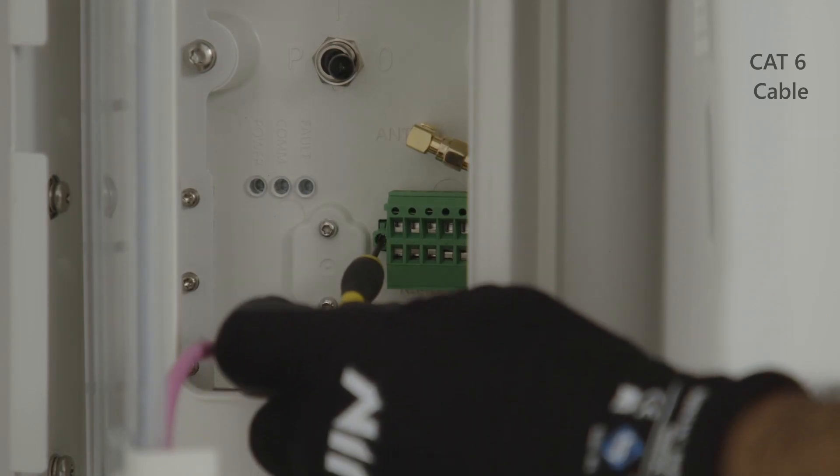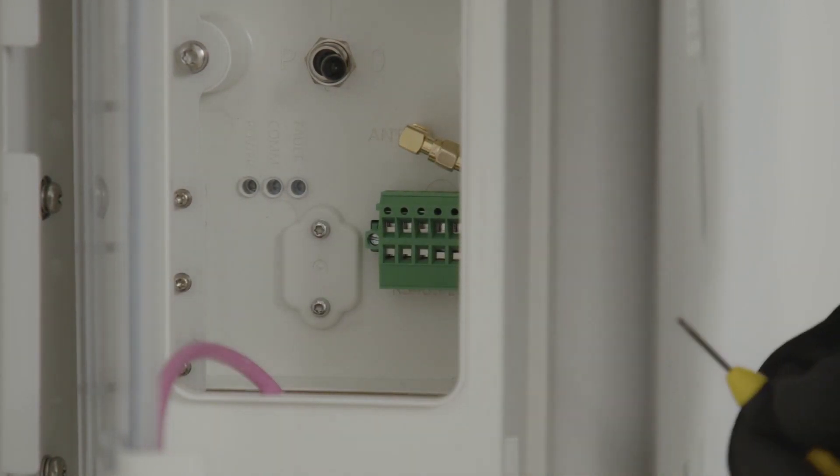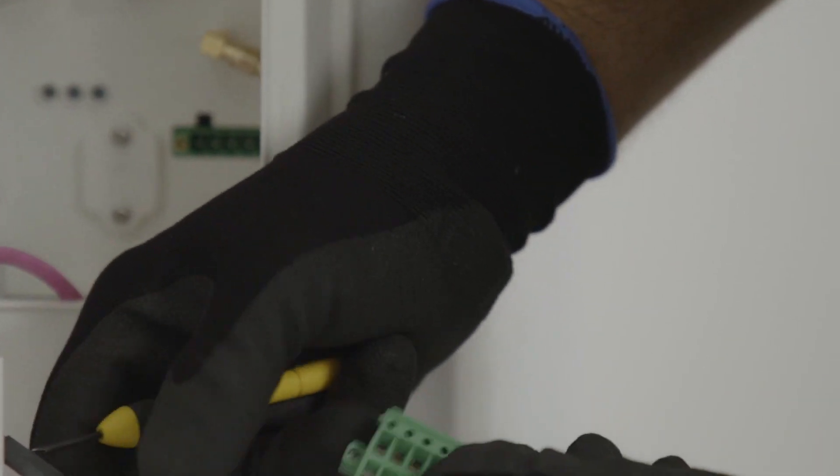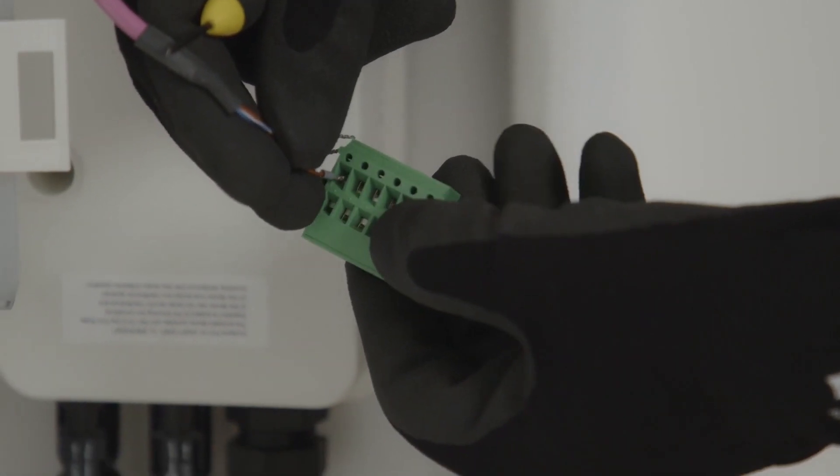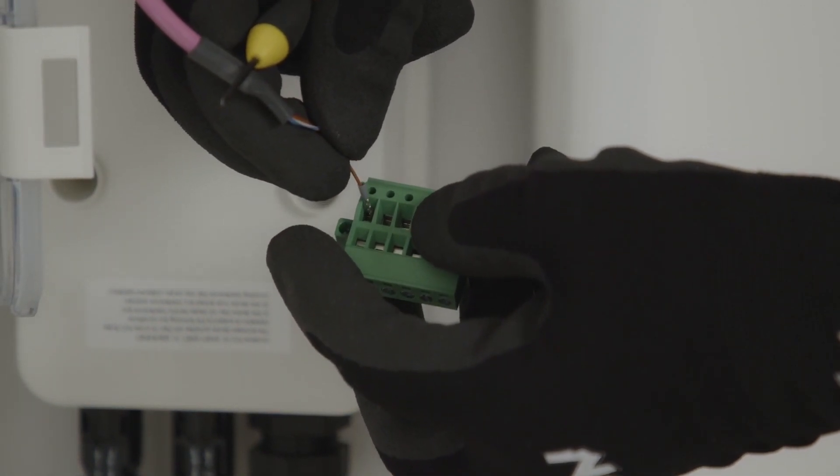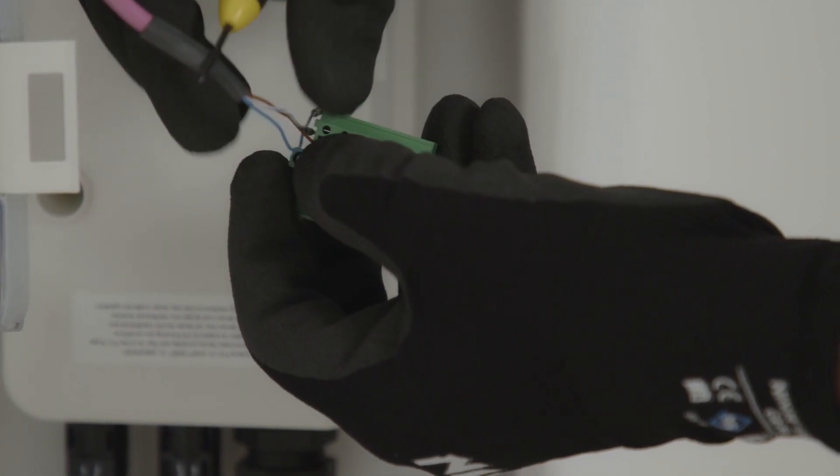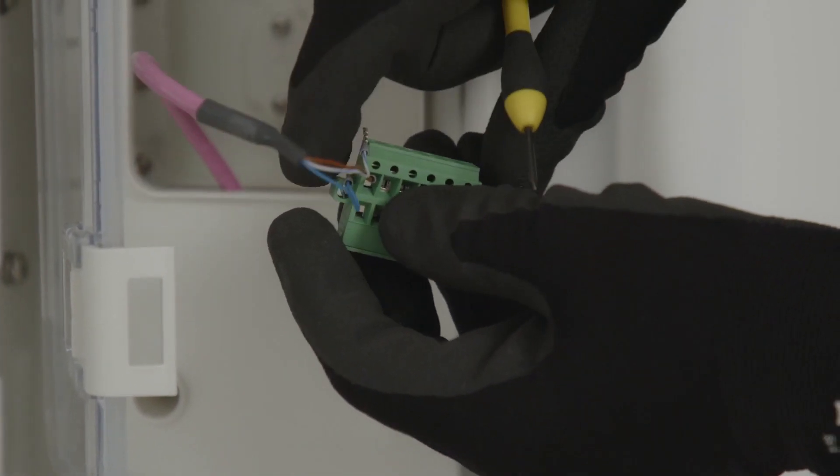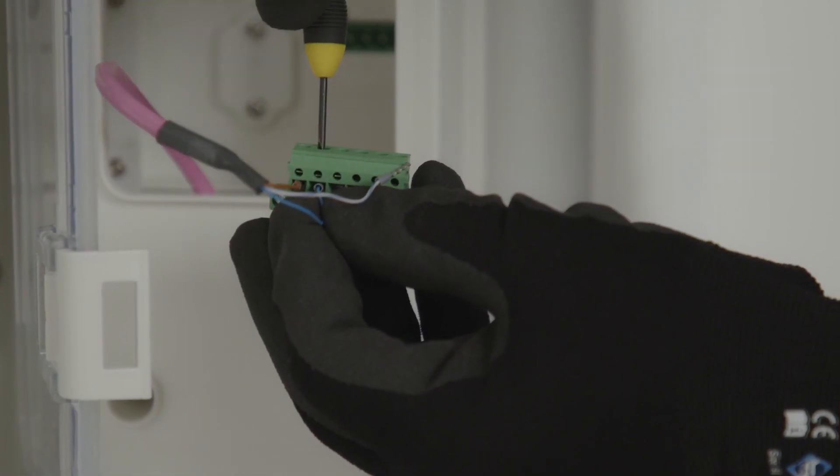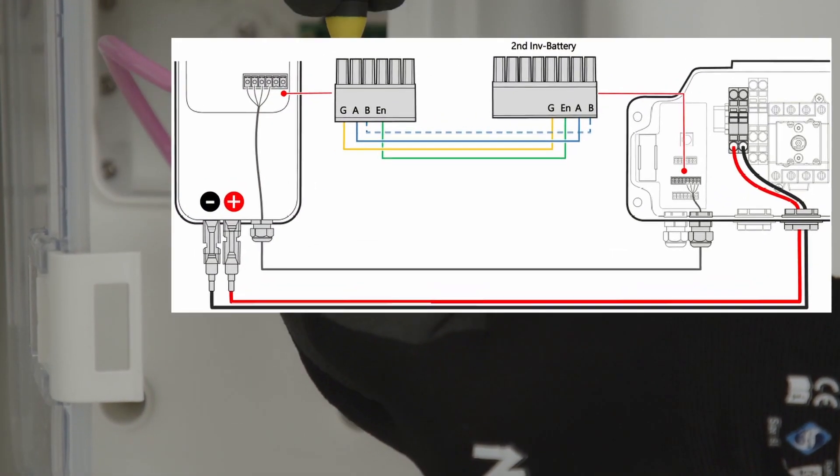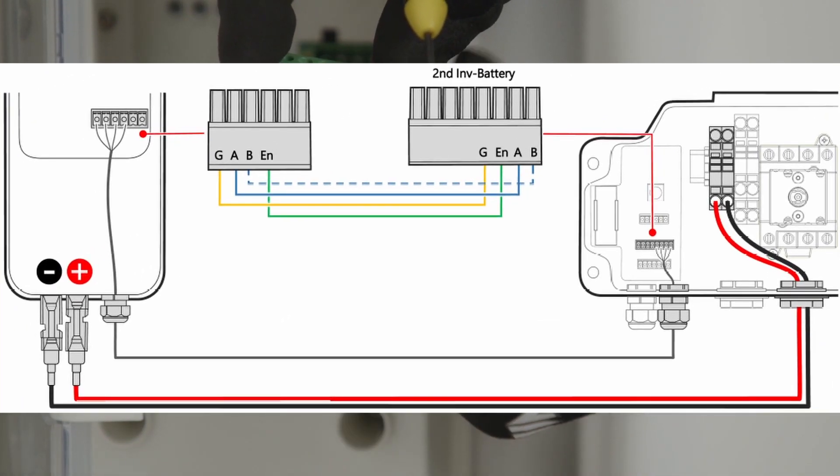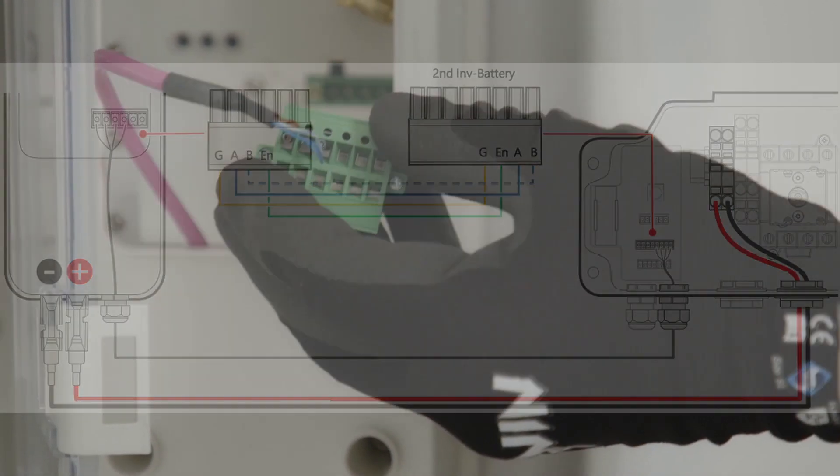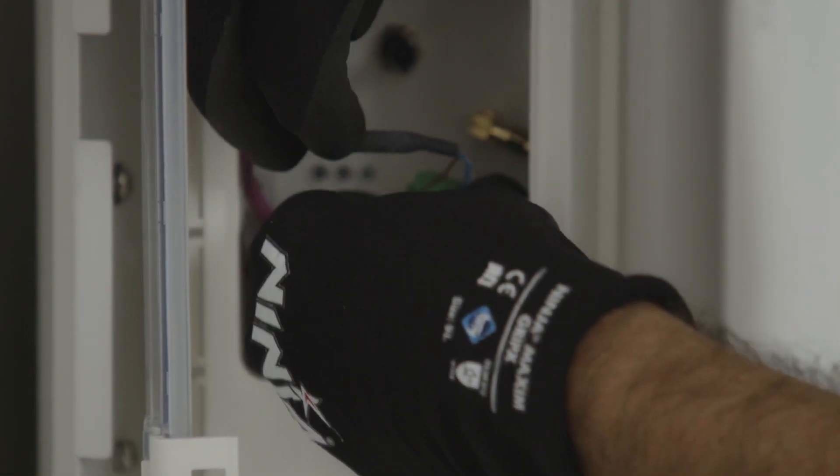For this process, firstly you need to undo the terminal block and remove it and then simply wire in the ground and the two A and B terminals as shown here. And replace the terminal block.